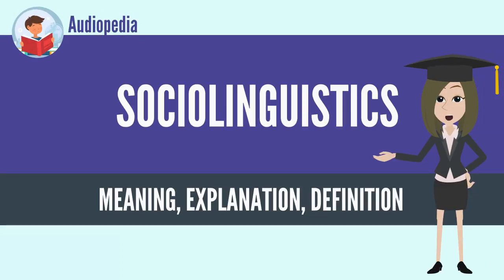Sociolinguistics is the descriptive study of the effect of any and all aspects of society, including cultural norms, expectations, and context, on the way language is used, and society's effect on language. It differs from sociology of language, which focuses on the effect of language on society.